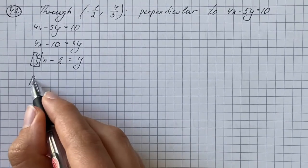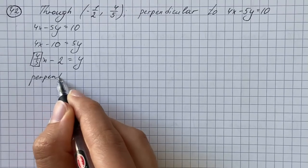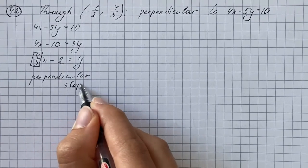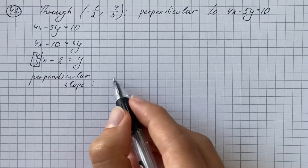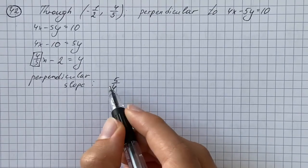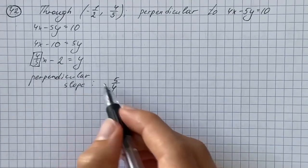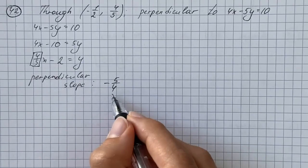That means that the perpendicular slope is going to be the reciprocal, that's 5 over 4, and also it's going to have another sign, that's going to be negative 5 over 4.